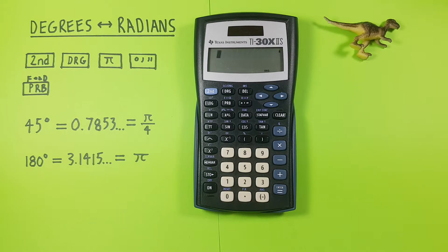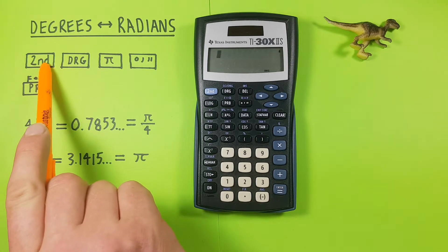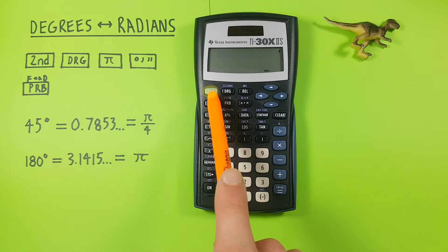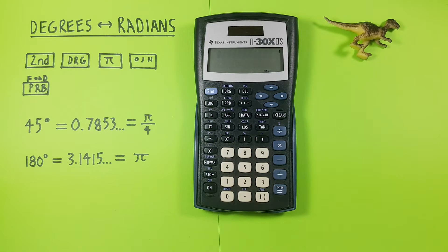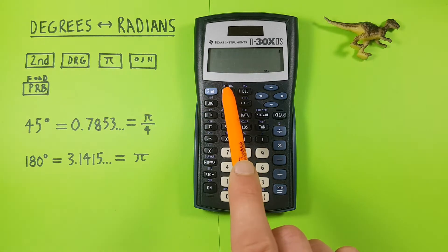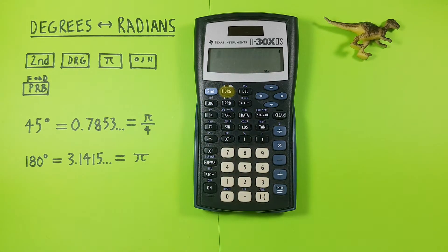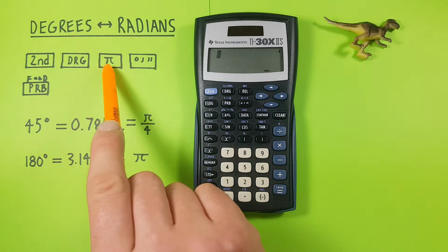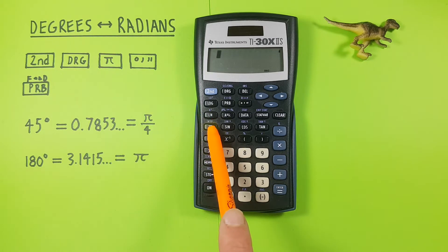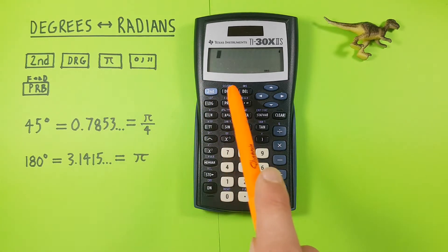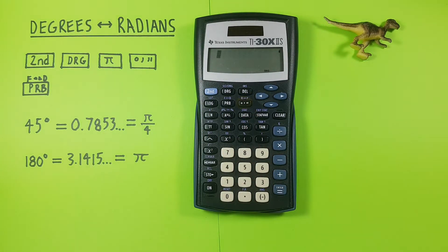To do this we'll use the second key that looks like this located here, the DRG key that looks like this located here, the pi key that looks like this located here, the degrees minute seconds key that looks like this located here, and the probability key that looks like this located here.